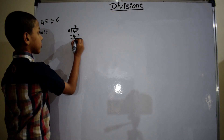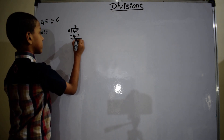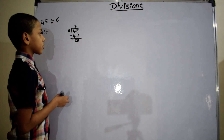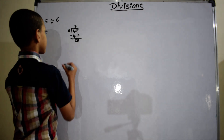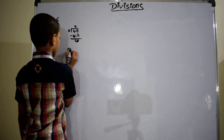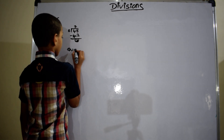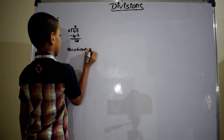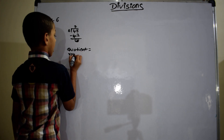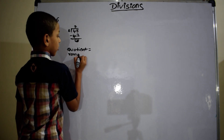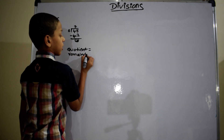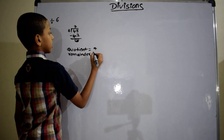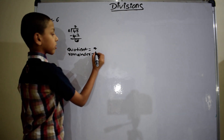So 45 minus 42 equals 3. It is not possible to divide further. So the remainder is 3. Quotient equals 7, remainder equals 3.